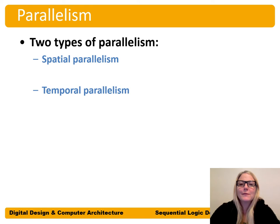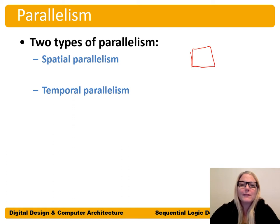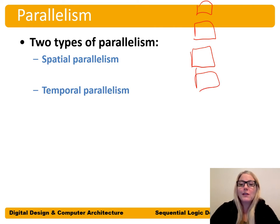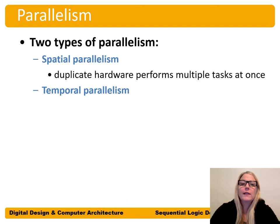We have two types of parallelism that we often use in circuits: spatial parallelism and temporal parallelism. Spatial parallelism is basically duplicating hardware. So if we have an adder or some circuit that's calculating something, instead of one, let's use two or three or four. Spatial parallelism means doing a bunch of things in parallel at the same time — duplicating hardware to perform multiple tasks at once.